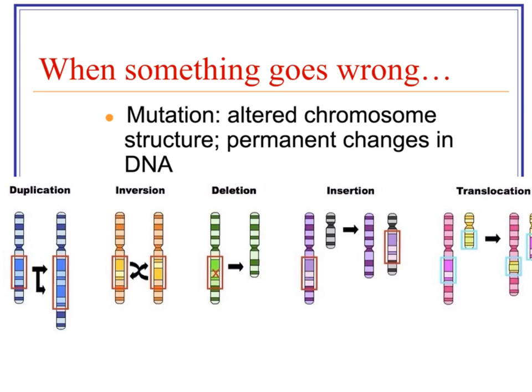These types of mutations could all potentially show up on a karyotype or on a full genetic analysis. When doing your genetic disorder research, pay attention to what is causing that genetic disorder — whether it is a point mutation, duplication, deletion, or nondisjunction — because that affects the inheritance.